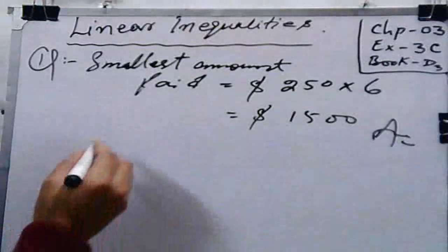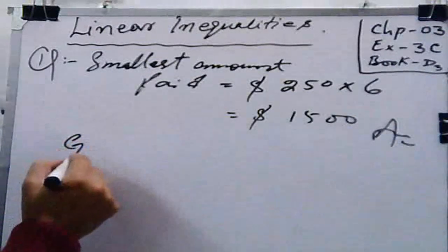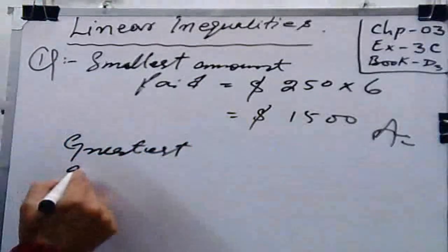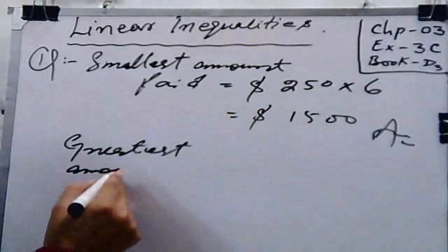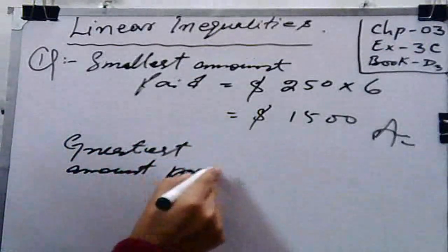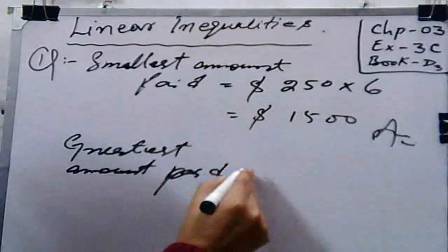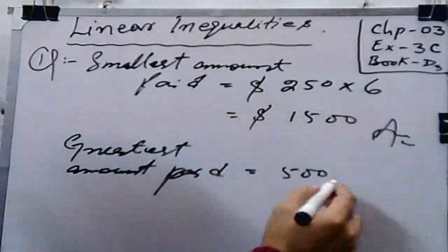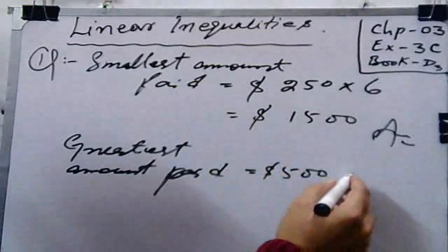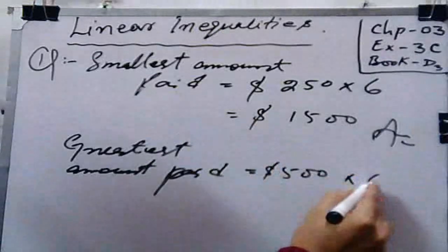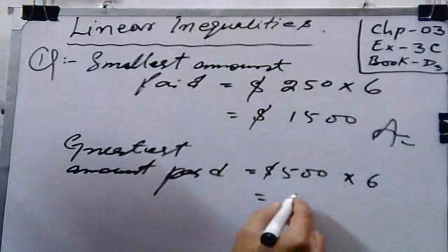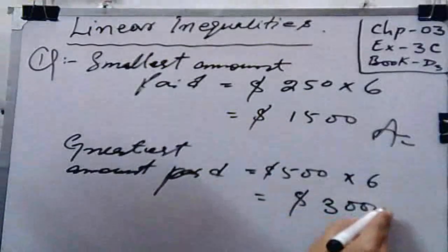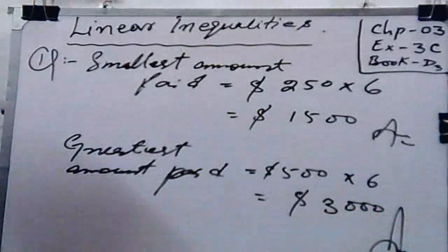Similarly, the greatest amount paid is equal to $500 multiplied by 6, so you will get $3,000. That is the required result.